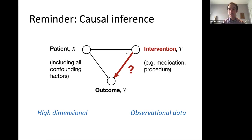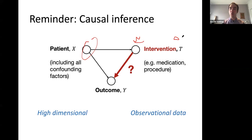Today's lecture continues from Tuesday's introduction to causal inference. The causal inference setting we're studying is a simplistic one from a causal graphs perspective. There are three sets of variables of interest: everything you know about an individual or patient, which we're calling X; an intervention or action T, which for today's lecture we'll suppose is binary — either zero or one; and an outcome Y.